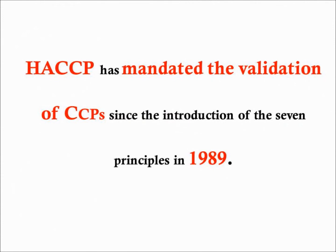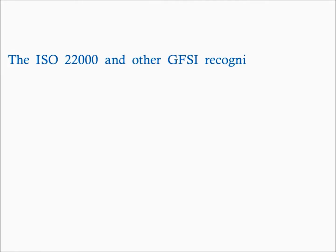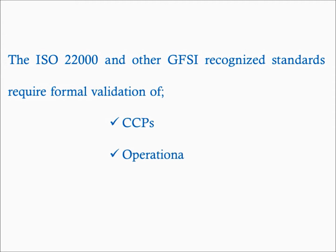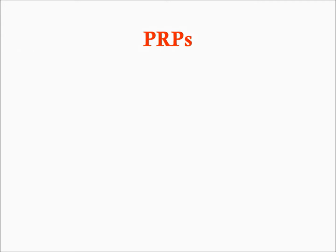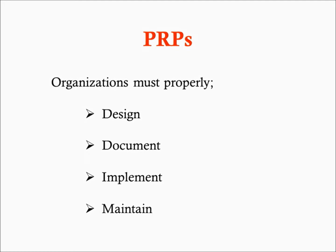HACCP has mandated the validation of CCPs since the introduction of the seven principles in 1989. ISO 22000 and other GFSI-recognized standards require formal validation of CCPs and operational prerequisite programs. In addition, cleaning and sanitizing programs must also be validated. Organizations must properly design, document, implement, and maintain prerequisite programs, even if the standard does not specify a validation requirement for this part of the food safety system.